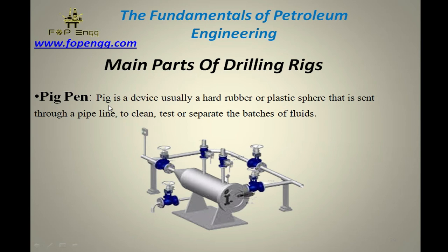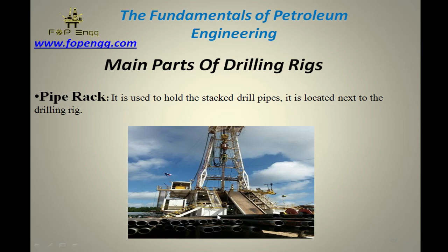Pig pen — a device, usually a hard rubber or plastic sphere, that is sent through a pipe to clean, test, or separate batches of fluid. Pipe rack — here we put our tubing or drill pipes for the cleaning purpose. Before run-in-hole, we have to clean the threads with diesel or oil, and we will also perform drifting — using different sizes of drifts to clean the inside of the drill pipes.